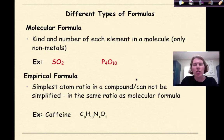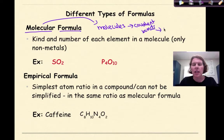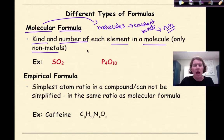Now let's look at two different types of chemical formulas. There's a more specific one called a molecular formula. When you see the word molecular, we think molecules, which means covalent bonds, which means non-metals. So a molecular formula is a more specific formula that applies to the kind and number of elements in a molecule, and they're only going to contain non-metals.